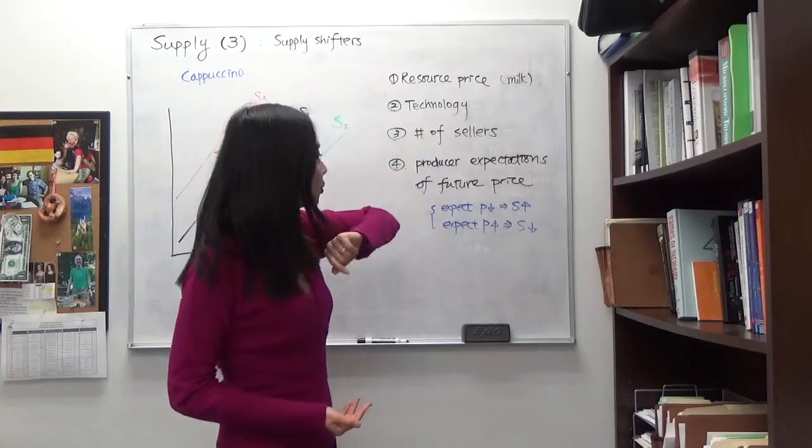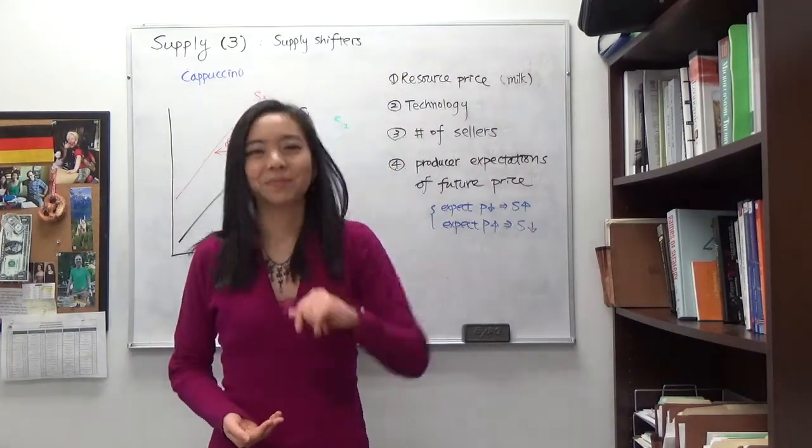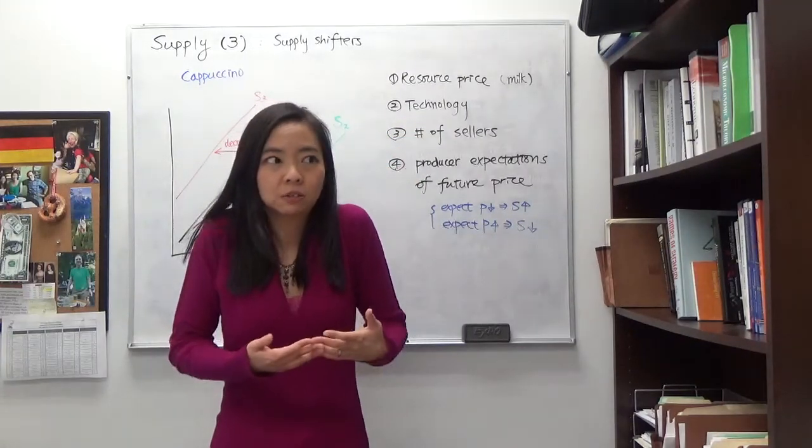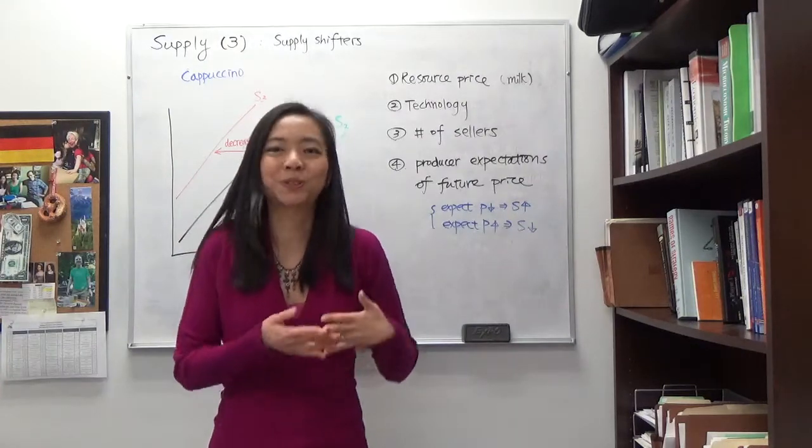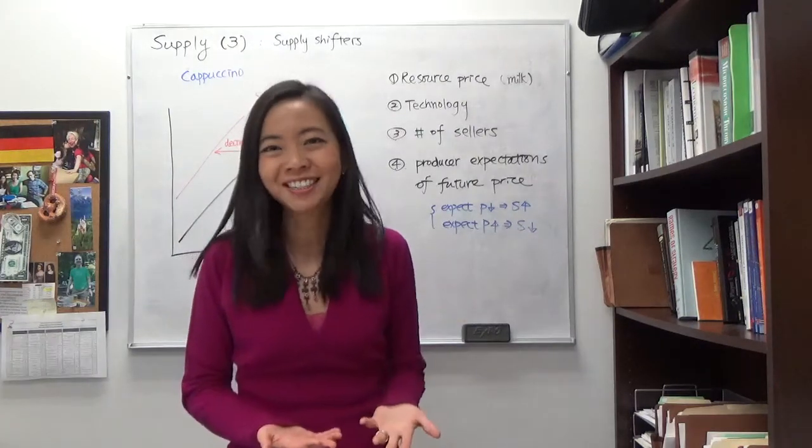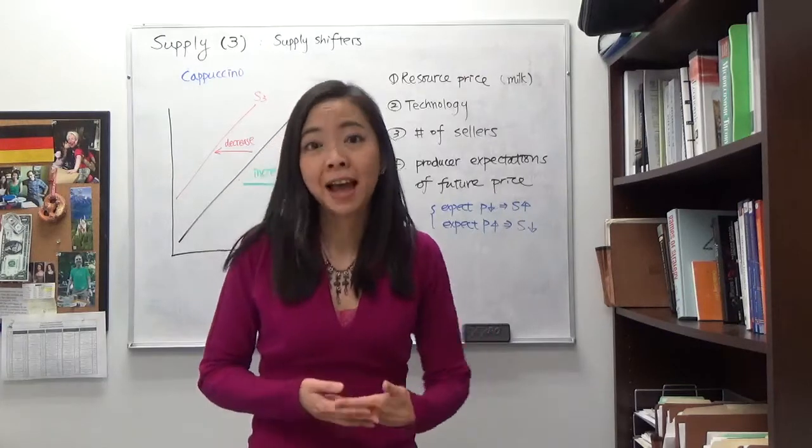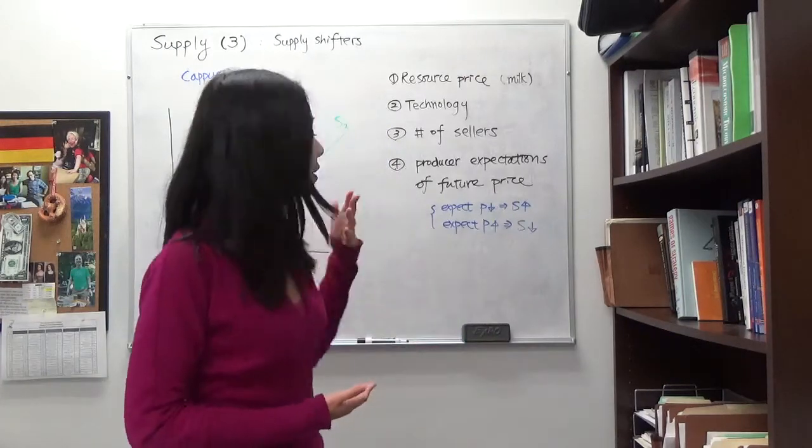And the second factor is technology. So technology makes it cheaper to produce cappuccino. Suppose there's a new technology, a new kind of coffee machine that will make cappuccino a lot faster, a lot more efficient.